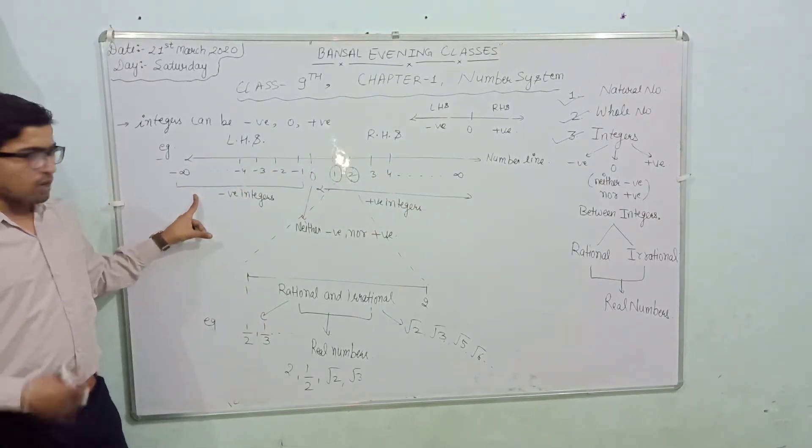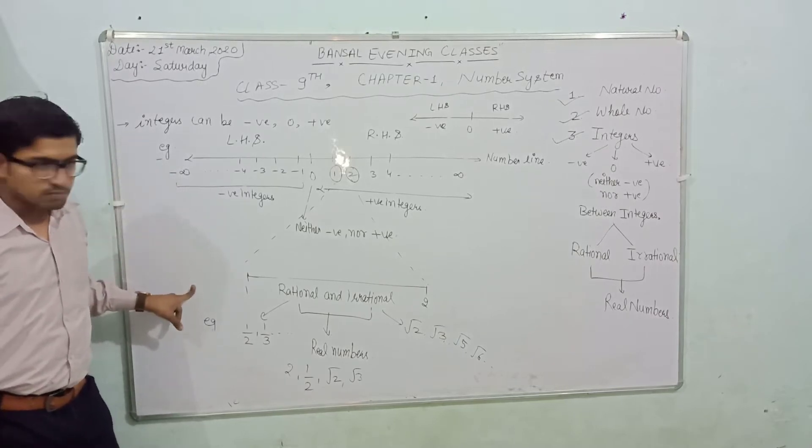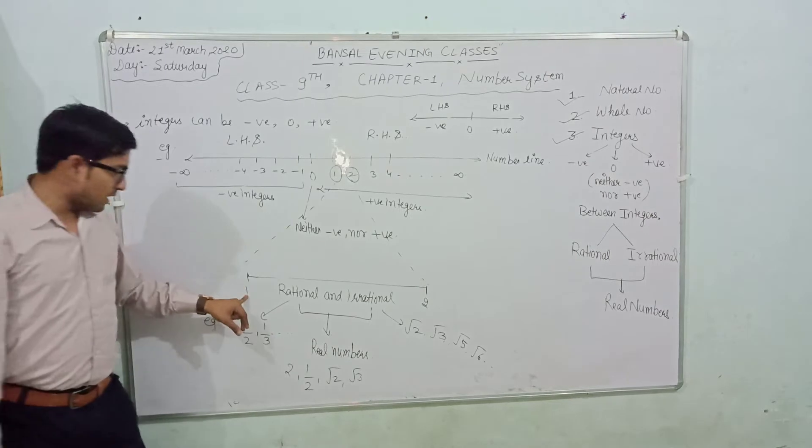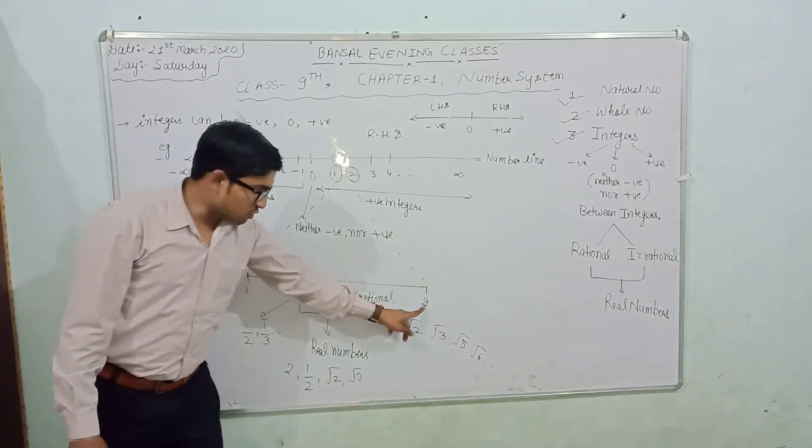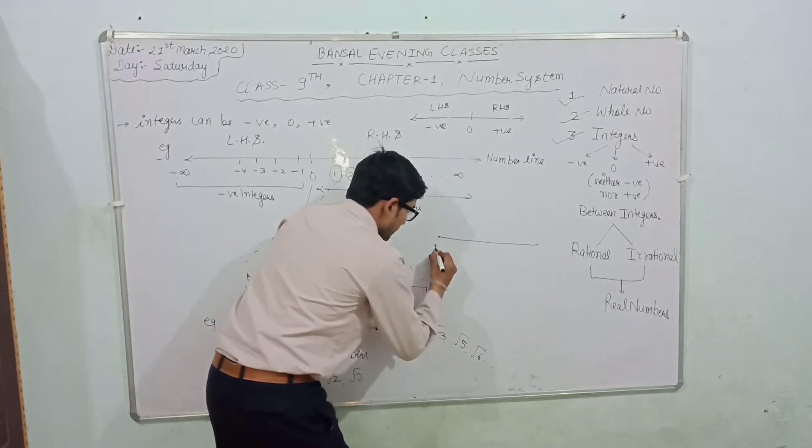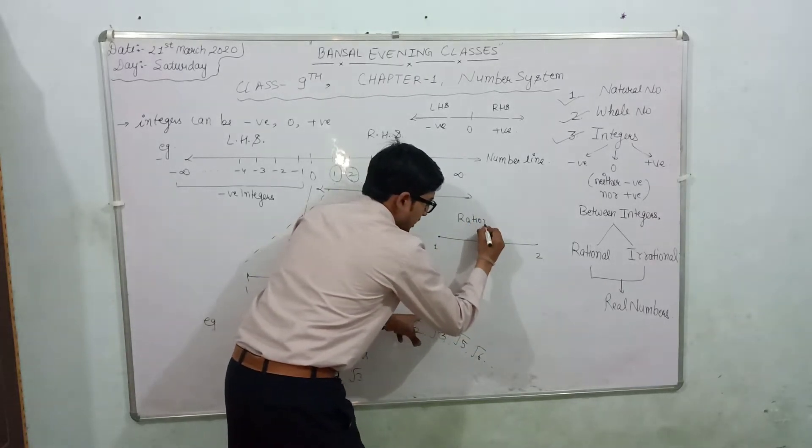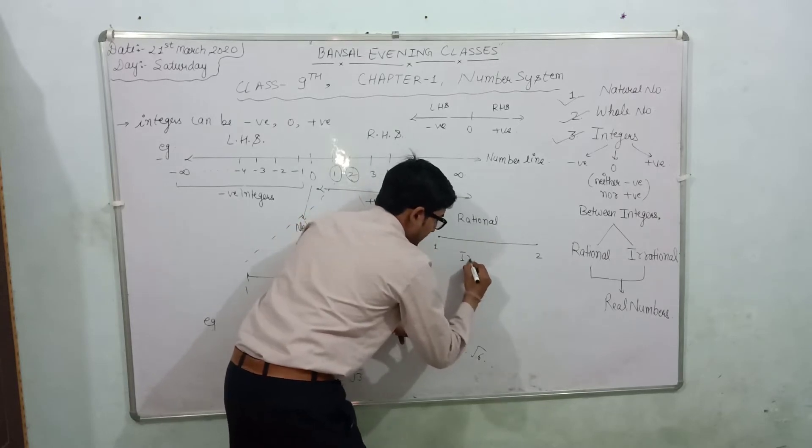Now, talking about more apart from the integers, we have rational and irrational numbers. If we talk about one is an integer, two is also an integer. So between any two integers, we have many numbers. Those numbers can be rational and irrational.